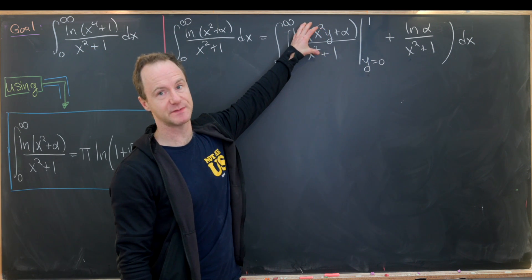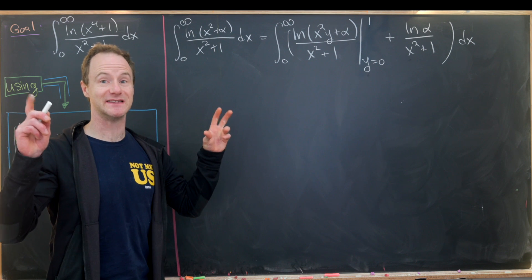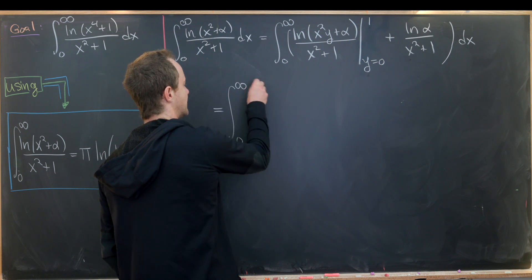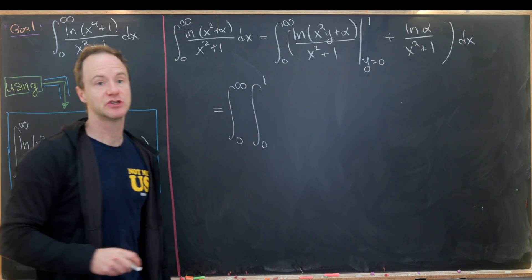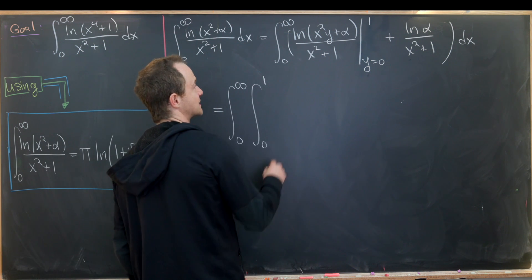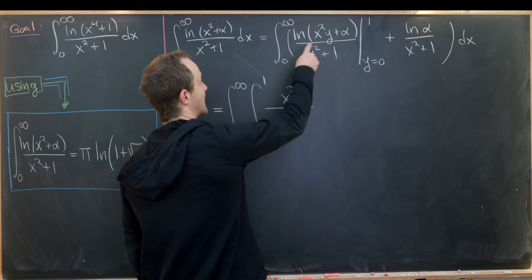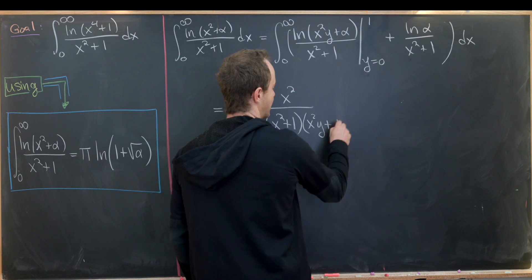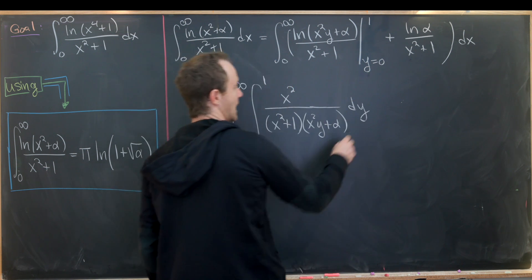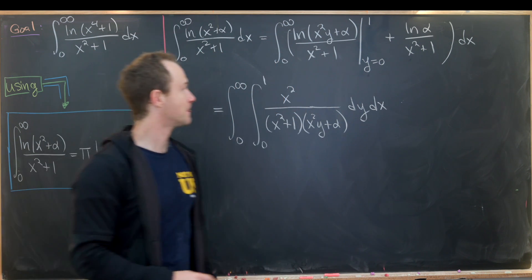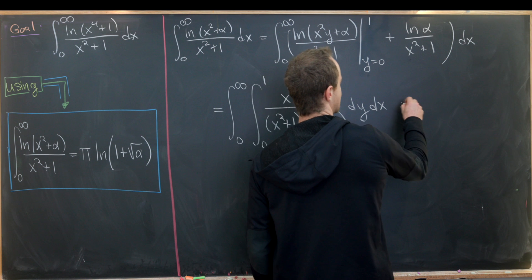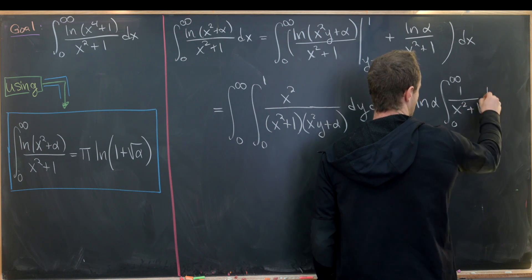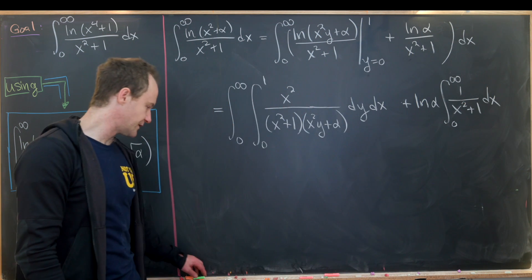Next I'll take the derivative of this with respect to y, changing it from what I think of as a zeroth integral to a first integral. Taking the derivative with respect to y gives us x² in the numerator by the chain rule, then in the denominator we'll have (x² + 1) and (x²y + α). That gives us a double integral from zero to infinity and zero to one, plus a single integral term involving the natural log of α. We've got a long road ahead.